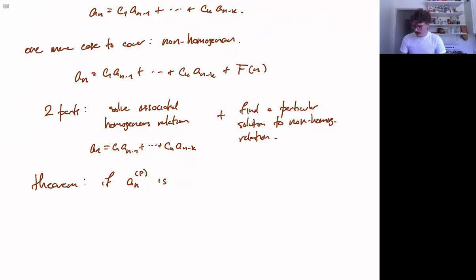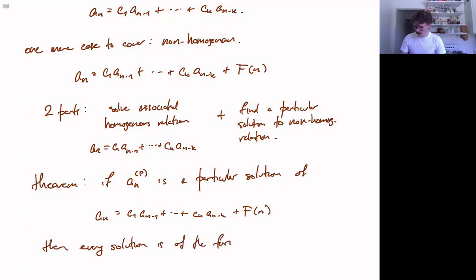So if a n p is a particular solution of the non-homogenous relation a n equals b1 a n minus 1 through c k a n minus k plus f n, so if we find a single solution to this recurrence relation, then every solution is of the form this particular solution that we found plus a homogenous solution to the associated homogenous equation, this part of the relation.